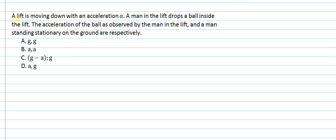Hello students, we'll understand this question now. A lift is moving down with an acceleration 'a'. A man in the lift drops a ball inside the lift. The acceleration of the ball as observed by the man in the lift and the man standing stationary on the ground are respectively — let's understand what has been said in this one.